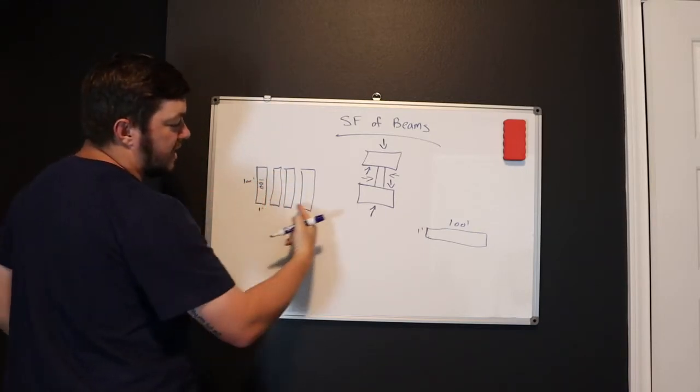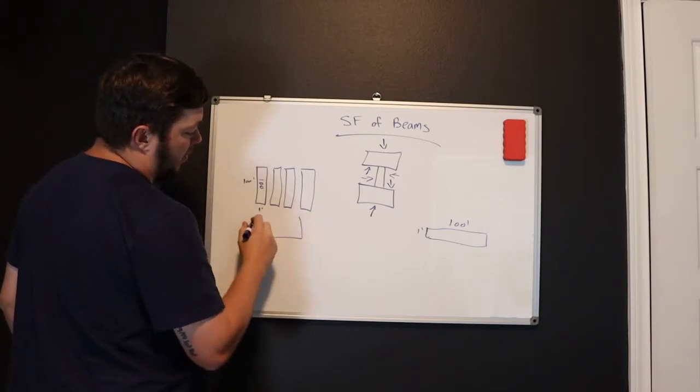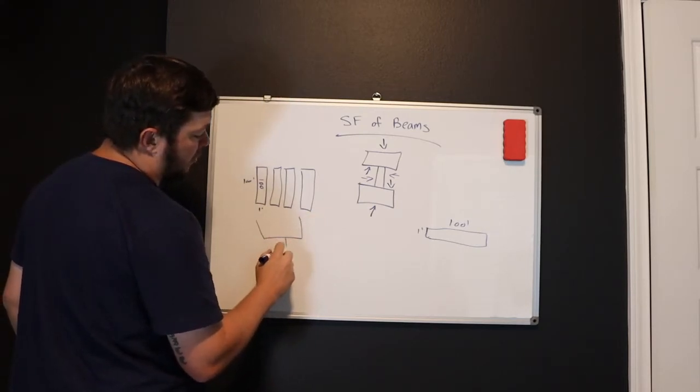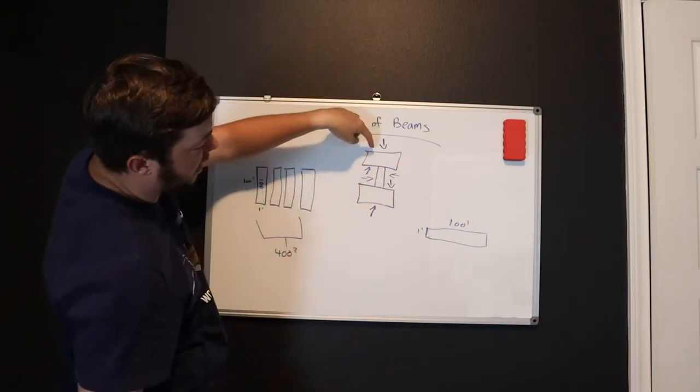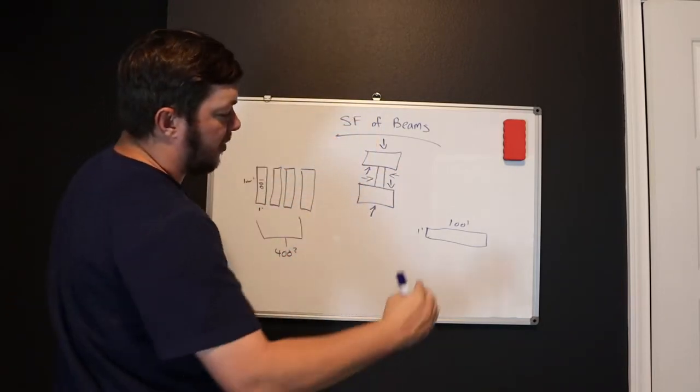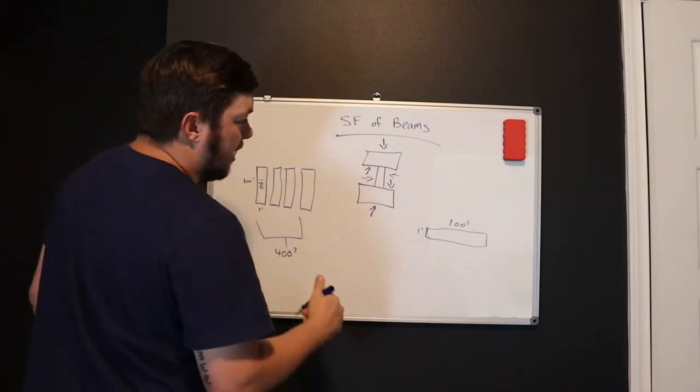So if we know this one was 100 square feet, we know that these have to be 100 square feet. So this is going to be 400 square feet total just on the tops and bottom sides of the horizontal runs.